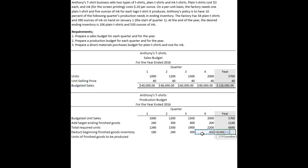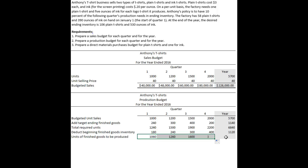Summing all four quarters gives the yearly total. The units of finished goods to produce equals total units required — that is, units to sell plus desired ending inventory — minus the beginning inventory already on hand. For Q1, that means producing 1,060 units. This production budget is a critical foundation for the master budget, as it drives how much labor we need and how much material we'll have to purchase.